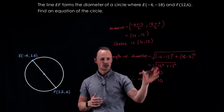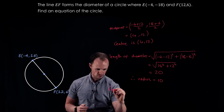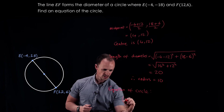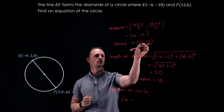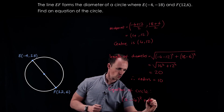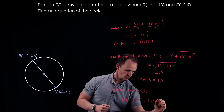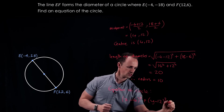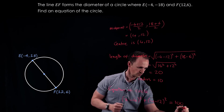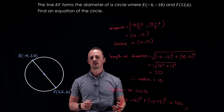Now that we've got the center and the radius, we can write down the equation of the circle. We get x minus 4, all squared, plus y minus 12, all squared, equals 100 — the radius squared. That's the equation of the circle that passes through these two points.